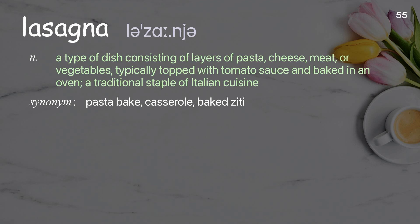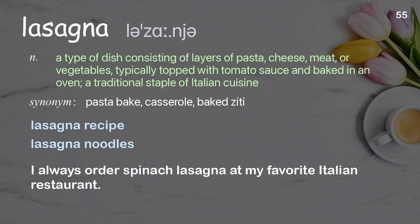Lasagna: A type of dish consisting of layers of pasta, cheese, meat, or vegetables, typically topped with tomato sauce and baked in an oven; a traditional staple of Italian cuisine. Examples: Lasagna recipe. Lasagna noodles. I always order spinach lasagna at my favorite Italian restaurant.